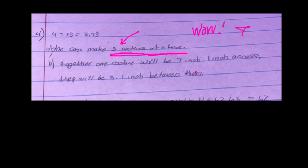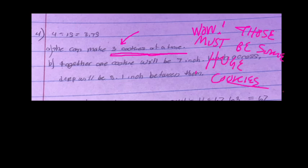But you had better be saying, wow, those must be some huge cookies. Or if you suspect, I must have done something wrong. I must have done something wrong to be saying eight pans in an oven, we can only make three cookies.